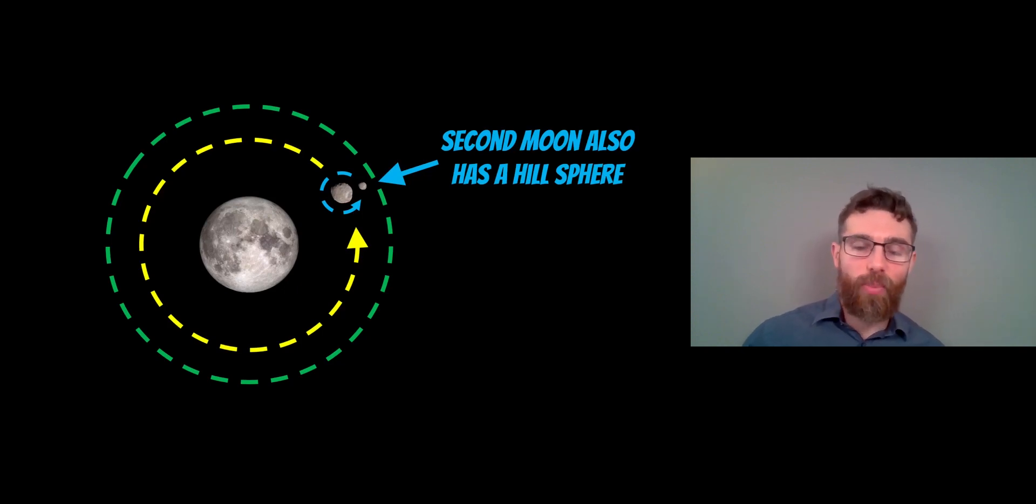But there is a possibility that that second moon could also have its own moon. Now again, it all depends on their sizes, their distance and things like that, but it is potentially possible.